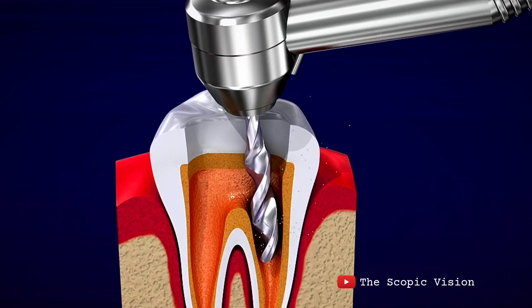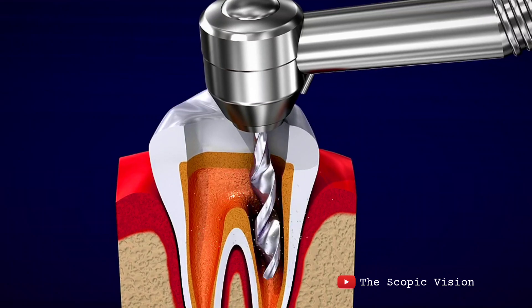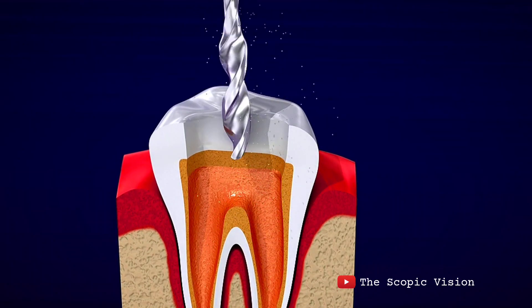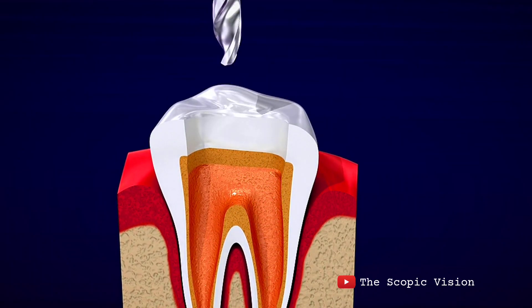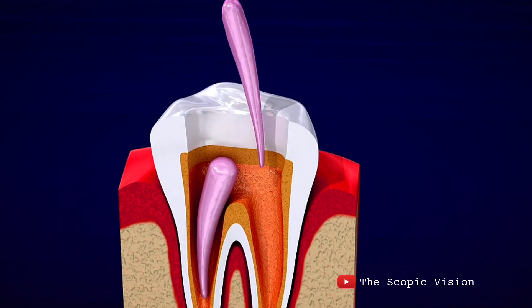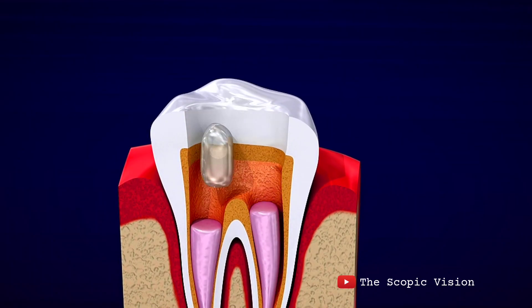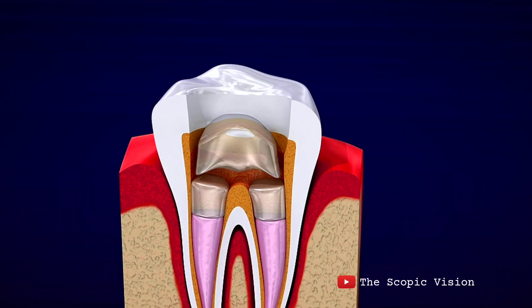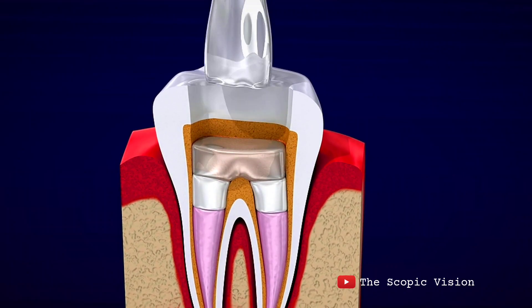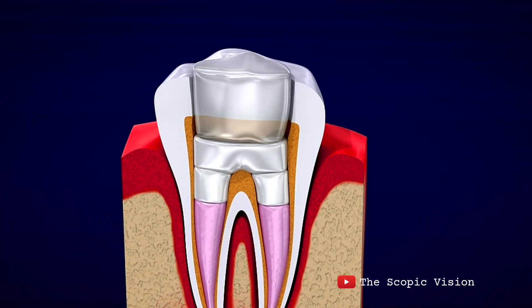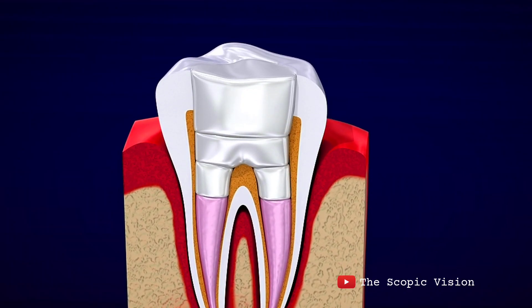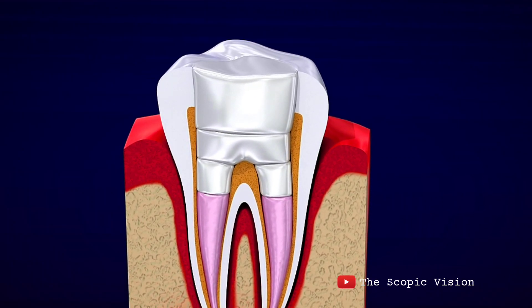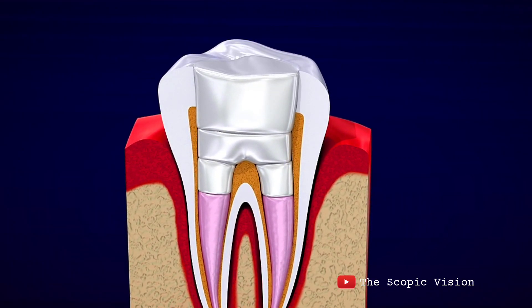After cleaning and disinfecting the root canals and pulp chamber, the empty space is filled with gutta percha, a flexible material, and sealed with a temporary filling. Finally, a dental crown is placed on the tooth to protect it and restore its function.